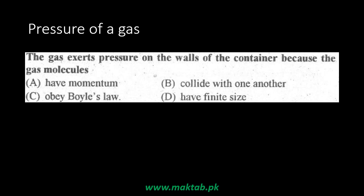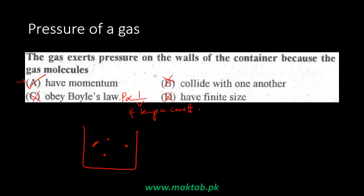The gas exerts pressure on the walls of the container because gas molecules transfer momentum to the walls — option A is correct. Option B says molecules collide with one another, which doesn't explain pressure on the walls. Option C mentions finite size, which doesn't cause wall pressure. Option D refers to Boyle's Law, which is only a pressure-volume relationship, not a cause of pressure.